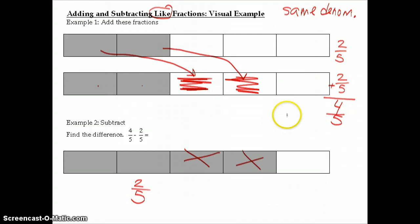But essentially, just by looking at these examples, we can notice when we added two-fifths plus two-fifths, what we actually added was the numerator. Two plus two is what gives us four, and denominator five stays the same.